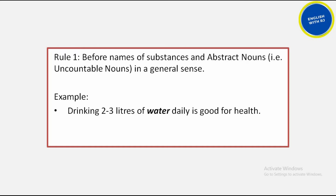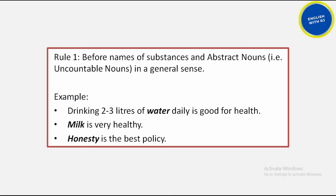Drinking 2-3 litres of water daily is good for health — no article is used in this sentence. Milk is very healthy — again, no article. Honesty is the best policy — honesty is an abstract noun, so no article before it. However, note that 'the best' does use an article because we use 'the' with superlatives.